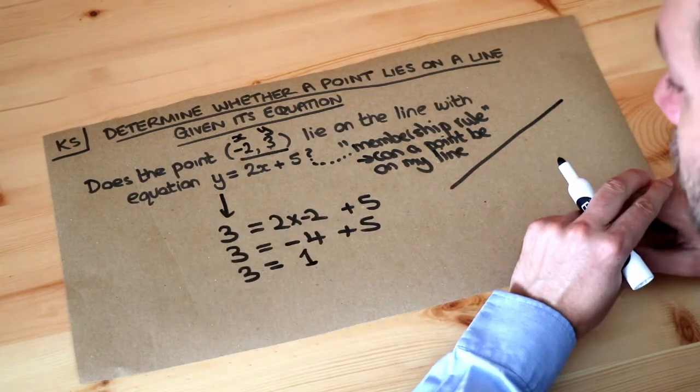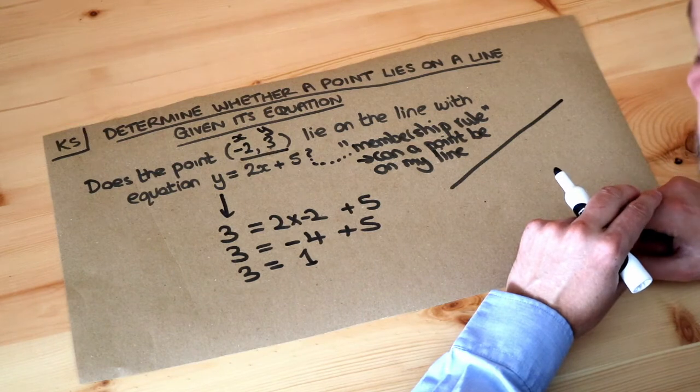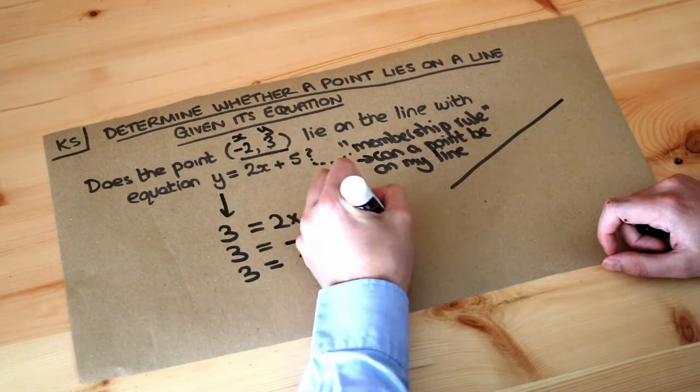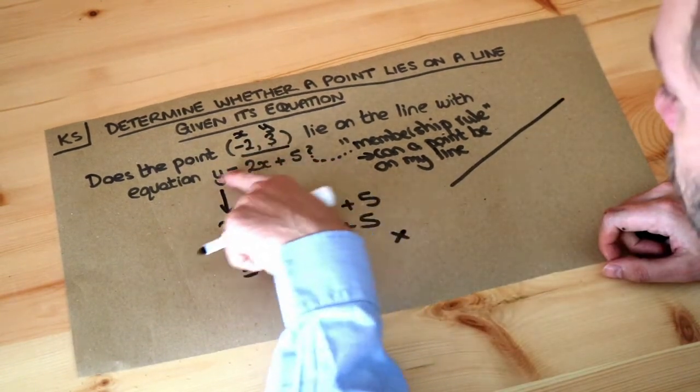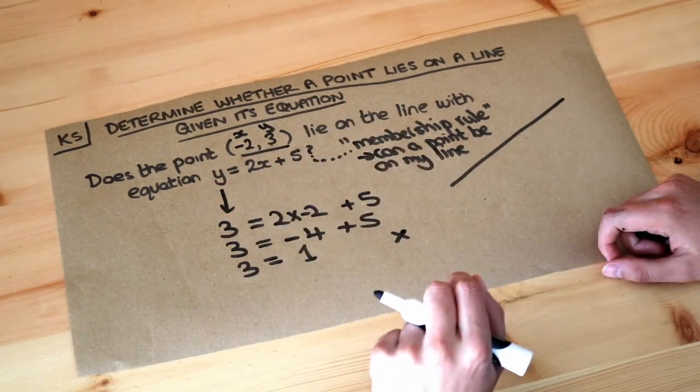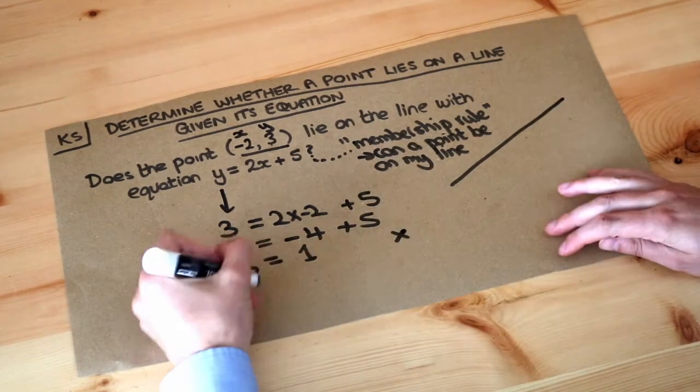So we've ended up with 3 = 1. Well, clearly that's not true. 3 is not equal to 1, and therefore this point does not satisfy the rule of this equation and therefore the point is not on the line.